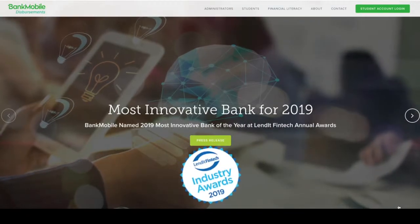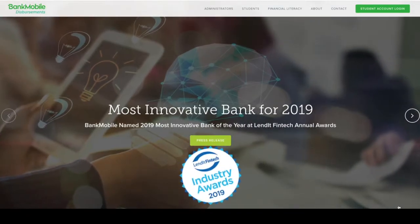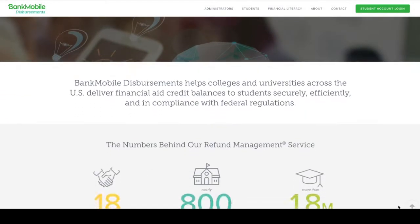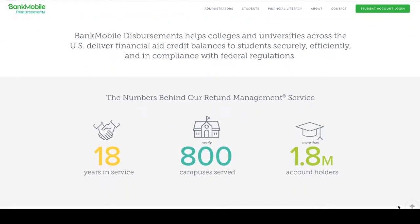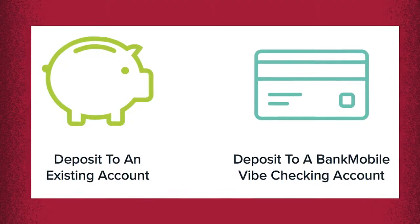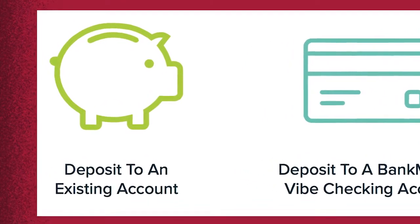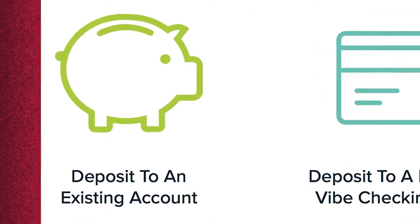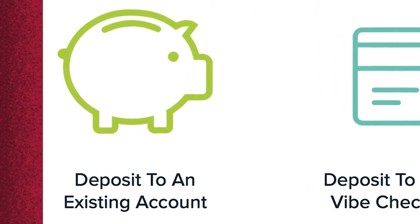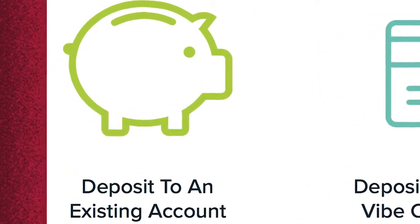Directions are included instructing the student to go to refundselection.com, use the personal code, and choose how they want to receive any refunds they might be eligible for. You have two basic options. The first is electronic delivery to your personal bank account. You'll enter your ABA routing number and your bank account number, and you will have your refund within two to three business days when the university releases the funds.